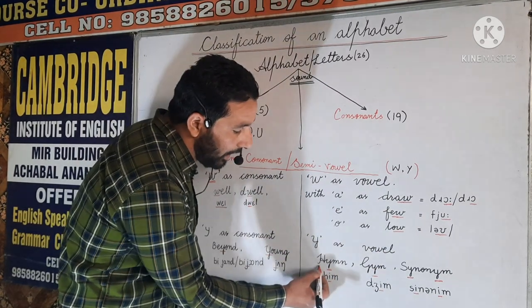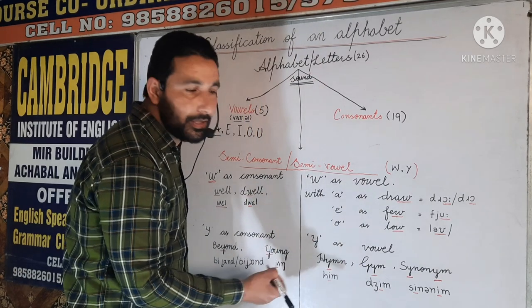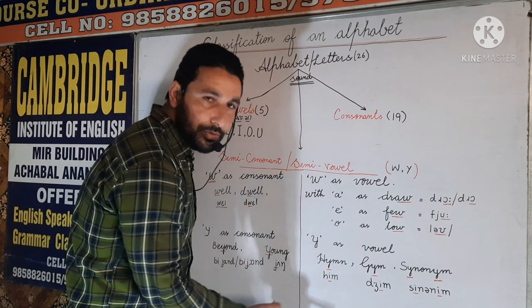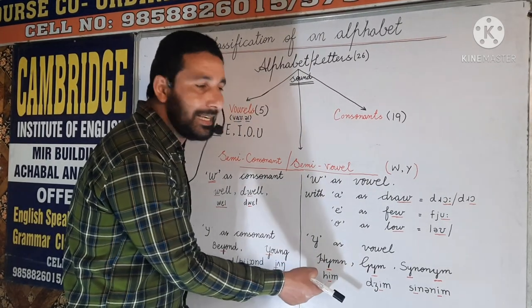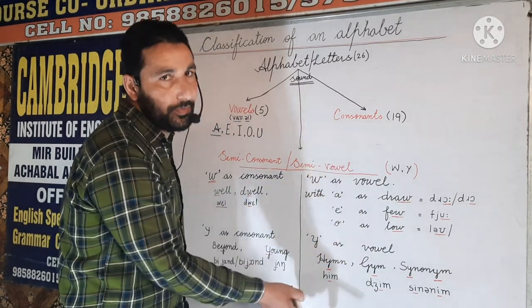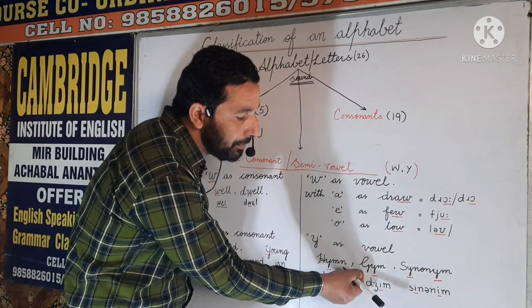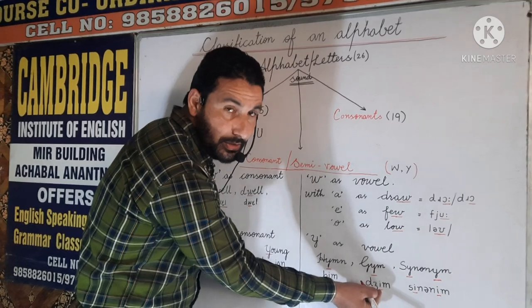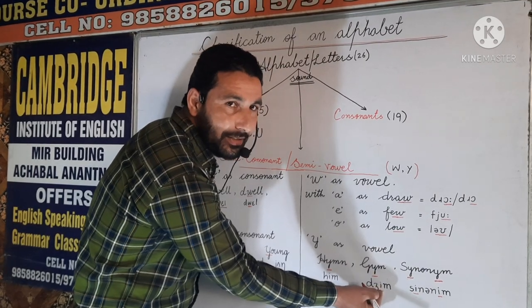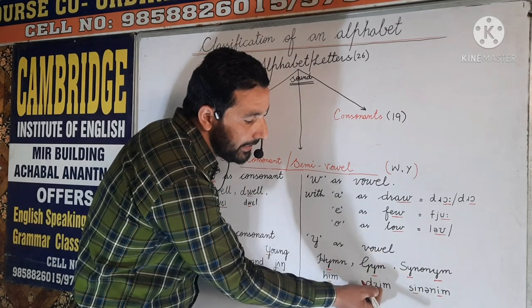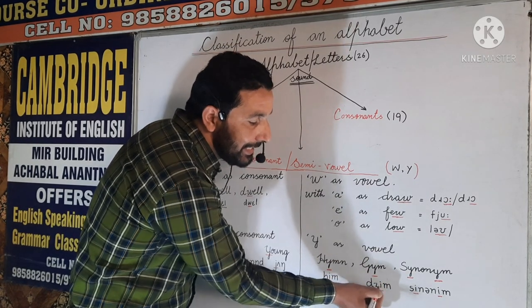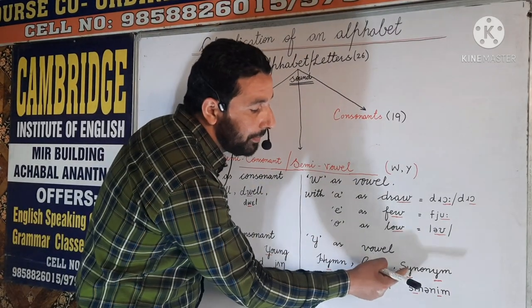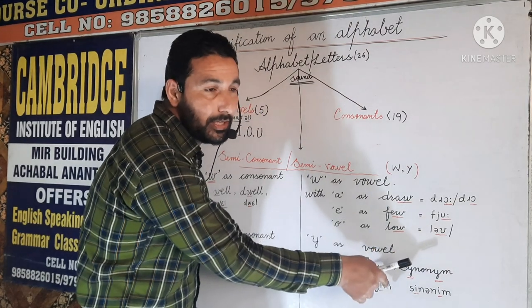In contrast, we have words where Y acts as a vowel sound. For example 'hymn' is pronounced as 'him' — this Y has the sound /ɪ/, which is considered a vowel sound in phonetics. Another example is 'gym' — this Y also has the sound /ɛ/ and in phonetics is considered a vowel sound.